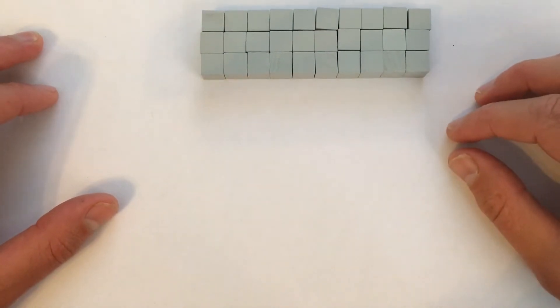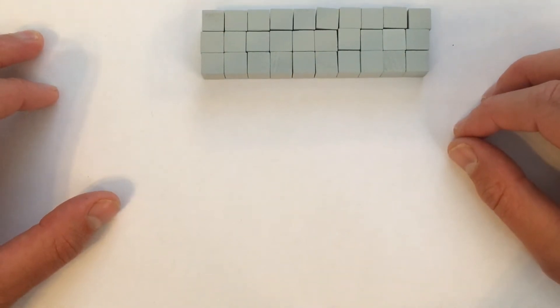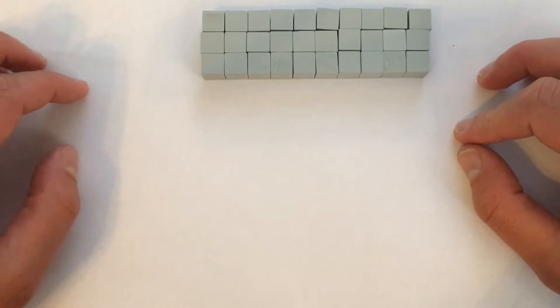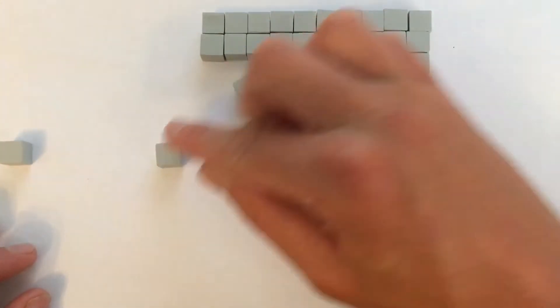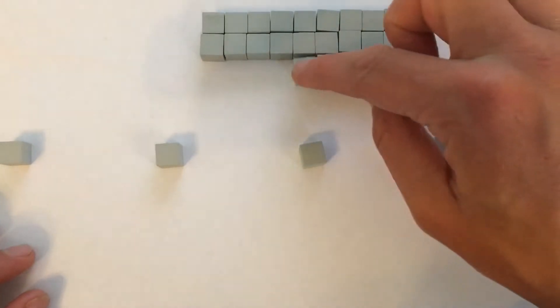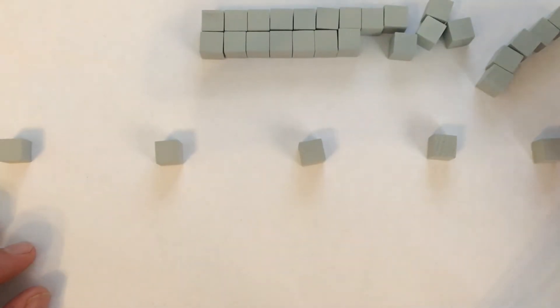I want to split these into 5 equal groups, if I can, because I want to find 1 fifth of 30. So I'll have 1 group, 2 groups, 3 groups, 4 groups, and 5 groups. And I've got to keep sharing these out to find out how many will be in each group.